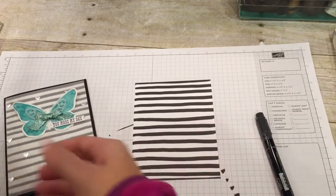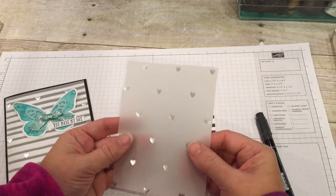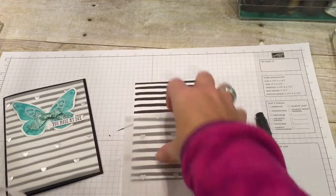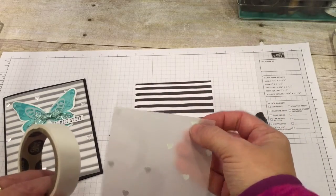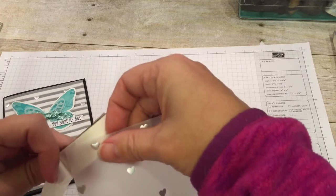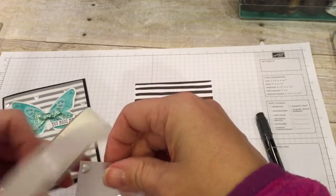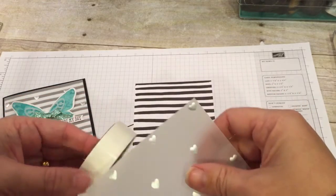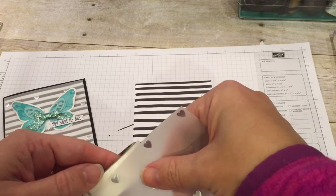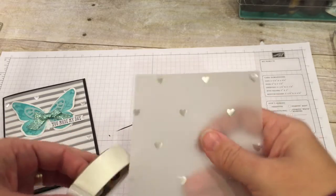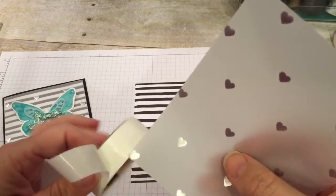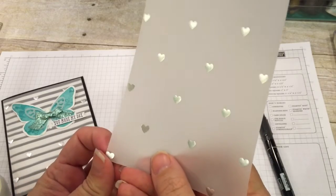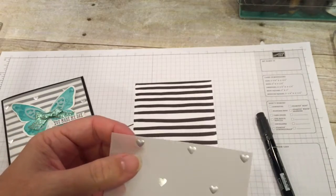Alright next what I'm going to do is I'm going to adhere a piece of the silver vellum. And to do that I'm going to use some glue dots and I'm turning the paper over and I'm going to hide the glue dots behind the hearts. So I will kind of do them as close to the four corners on my card as I can. And you will see the nice thing is that the glue dots are hidden because that's always the trick with vellum.